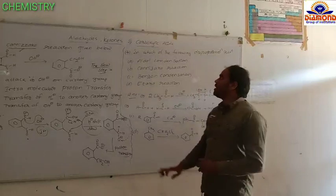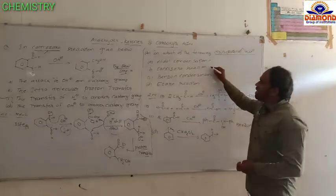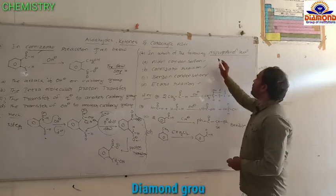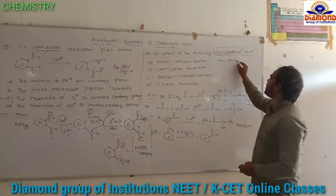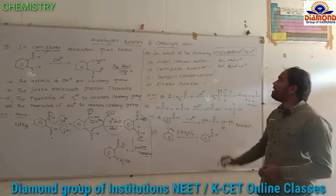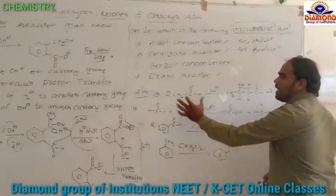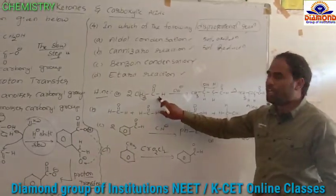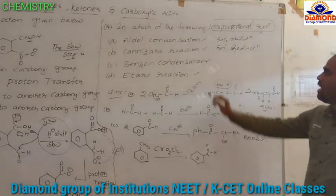This next question is related: which of the following is a disproportionation reaction? They are given four options: aldol condensation, Cannizzaro reaction, benzoin condensation, and Etard reaction. Among these, which one is called a disproportionation reaction? Disproportionation reaction means 50% oxidation and 50% reduction takes place. Aldol condensation involves two aldehydes containing at least one alpha hydrogen — in the presence of base they form an aldehyde product. That is called aldol condensation.